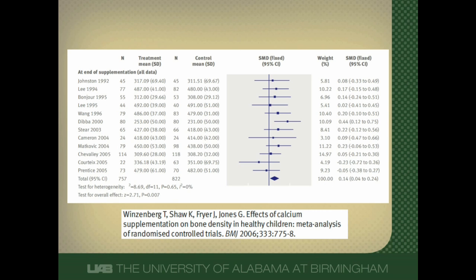Finally, this is a forest plot of the effects of calcium supplementation on bone density published in the BMJ. The outcome is the same in all these studies — bone density — but it was measured differently. So in this case, because the individual measures of the same outcome are different, we have to calculate a standardized mean difference. The effect of calcium supplementation was a standardized mean difference of 0.14. Any standardized mean difference of 0.2 or less is a small effect, so calcium had a very small effect on bone mineral density.